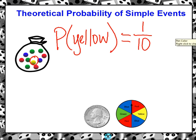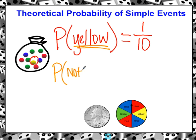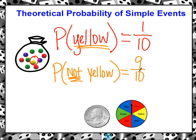I want to look at something quickly — it's called a complement. If the probability of drawing a yellow is one out of ten, what would the probability of not yellow be? We know the probability of drawing a yellow is one out of ten, so the probability that it's not going to be yellow: we look in the bag and there are nine out of ten that are not yellow. If one out of ten are yellow, then nine out of ten would not be yellow.